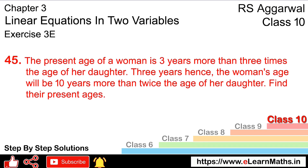Let's do question number 45 of Exercise 3E, that is linear equations in 2 variables. Question number 45: the present age of a woman is 3 years more than 3 times the age of her daughter. Find the present ages.